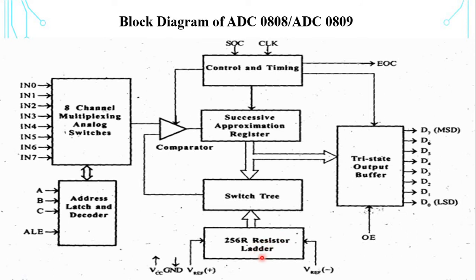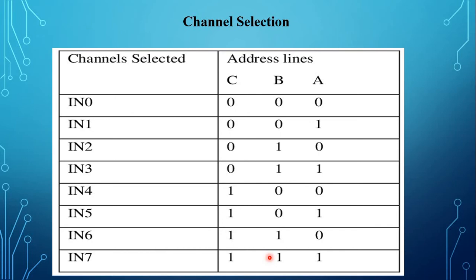In the analog to digital conversion process, the input analog value is quantized and each quantized analog value is converted into its binary equivalent. The ABC address lines decide the channel operation — that is, 000 means channel 0 is selected, and 111 indicates channel 7 is selected.